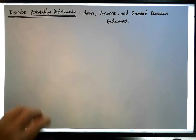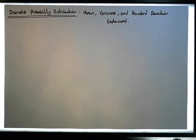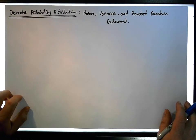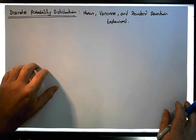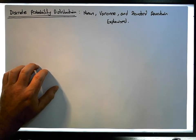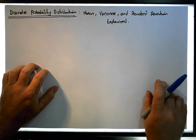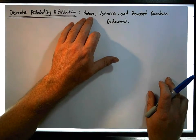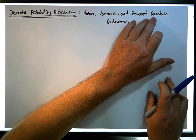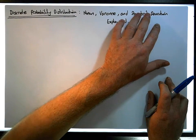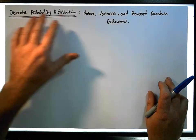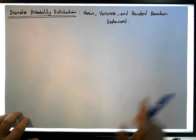Hi guys, this is Jonathan Lambert with Maths and Stats. In this short video I'm going to walk through and try to demystify the formulas associated with the mean, the variance and standard deviation. In particular, the formulas for calculating the mean, variance and standard deviation are associated with discrete probability distributions.